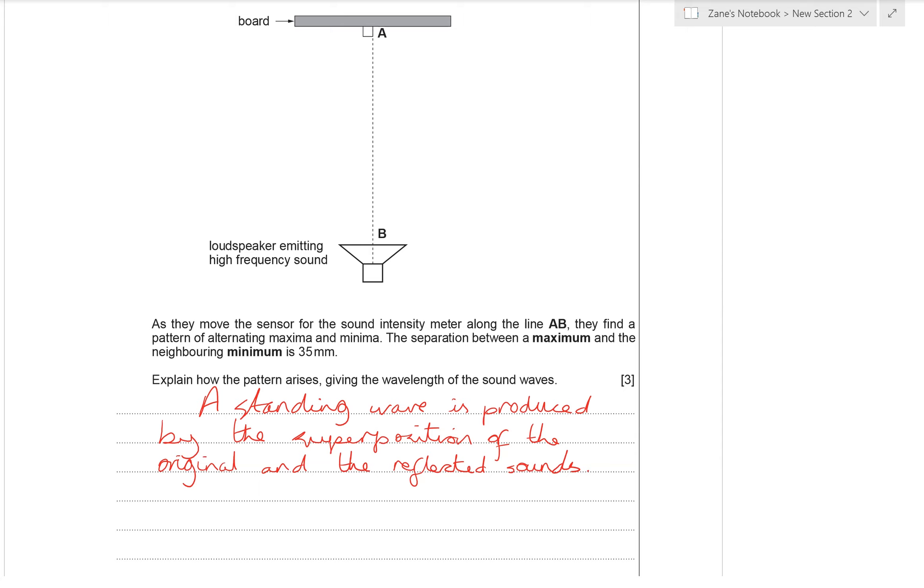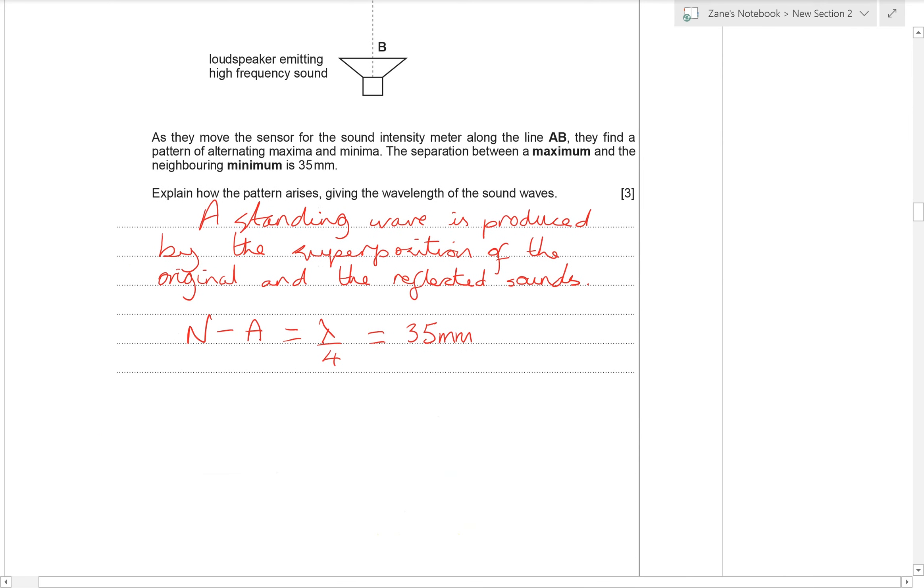The question also asks us to work out what the wavelength of the sound waves are. Well, if we realise that the maxima are antinodes and the minima are nodes, then the distance between a node and an antinode is actually a quarter of a wavelength. And that distance in the question is 35 millimetres. So fairly logically, the wavelength is 35 times 4, which is 140 millimetres.